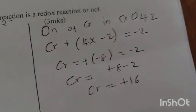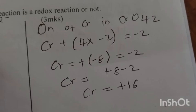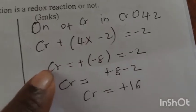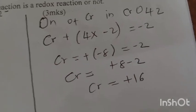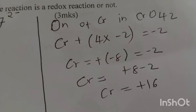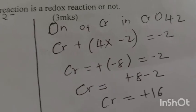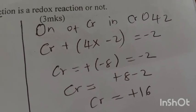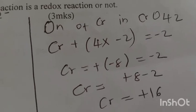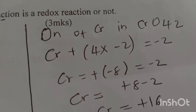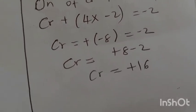The oxidation number of chromium ion in chromate: Cr + 4(-2) = -2, so Cr - 8 = -2. Therefore Cr = +6.